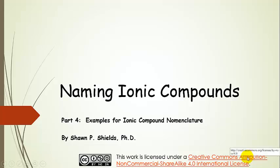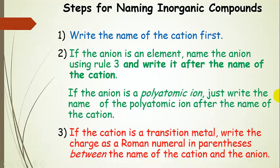Naming Ionic Compounds. These are examples for ionic compound nomenclature. Let's start with an overview for how to name inorganic compounds. What we're going to do first is write the name of the cation. The cation is always going to come first in an inorganic compound name.